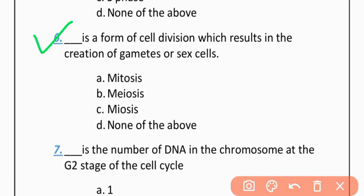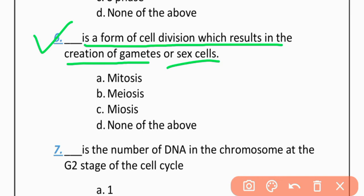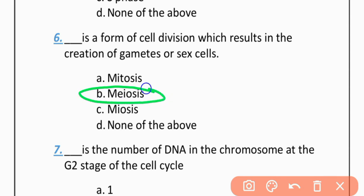MCQ 6: Which is the form of cell division which results in the creation of gametes or sex cells? Option A: Pytosis. Option B: Meiosis. Option C: Meiosis. Option D: None of the above. The correct option is B — Meiosis.